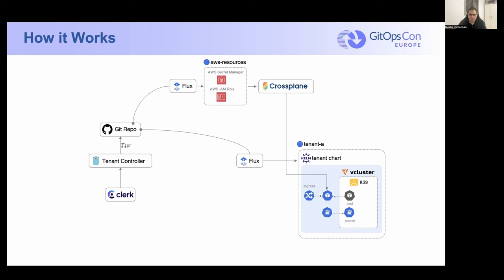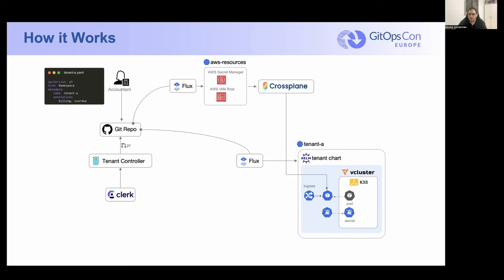You can do escape patches fairly easily here. For example, if an accountant wants to mark a tenant as billing overdue and pause the infrastructure or display warnings to the user, they can go in and push changes directly to the Git repo — either as an individual making commits or a system making commits via a tenant controller or a different controller. You get a nice isolated control loop, and as a result, lots of little isolated control loops that work independently of one another.